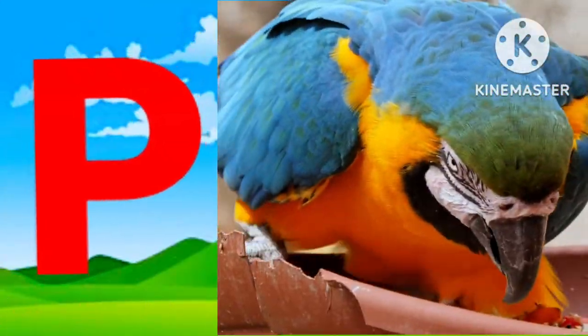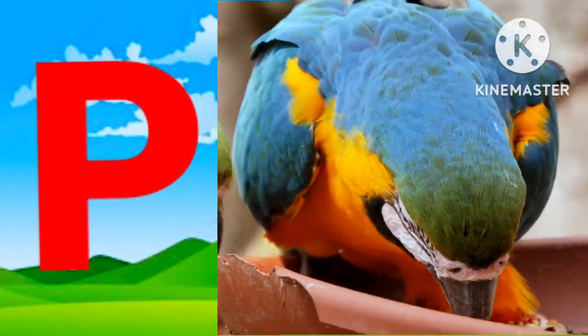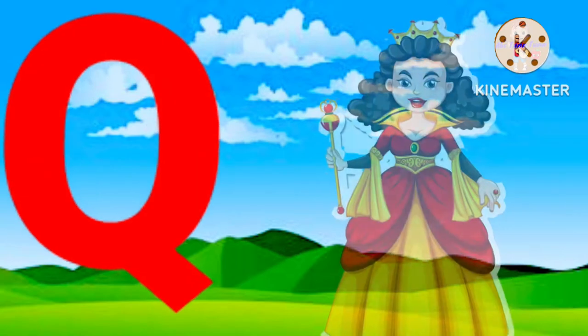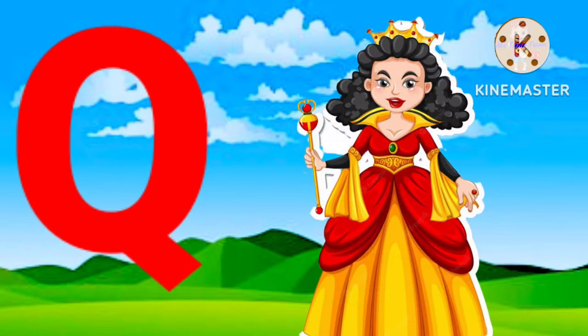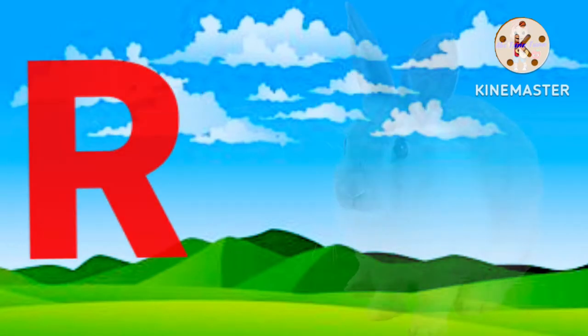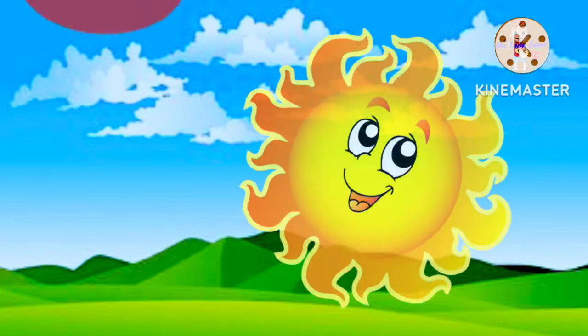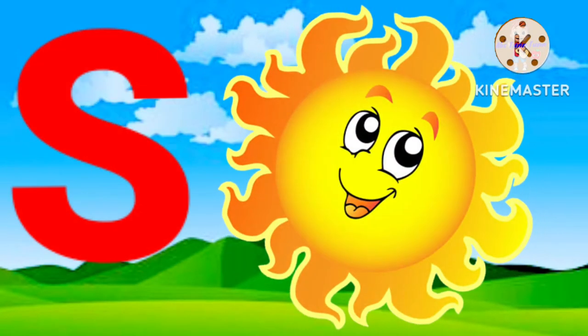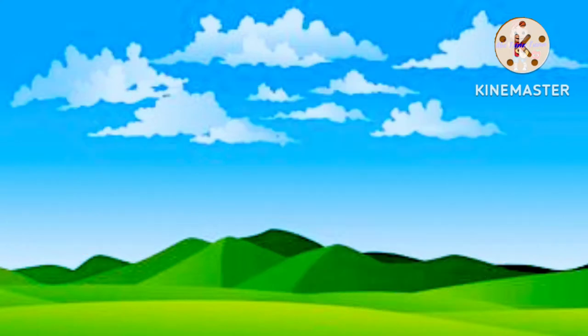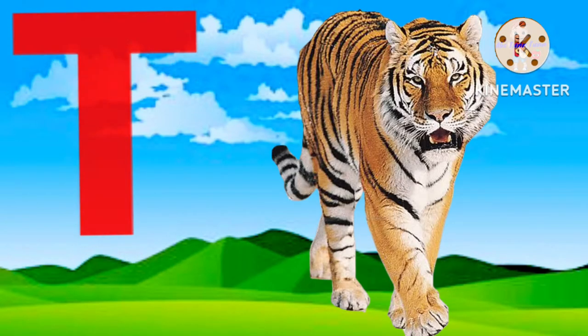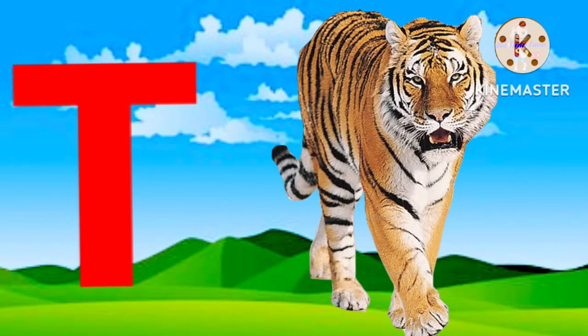B for parrot, Q for queen, R for rat, S for sun, T for tiger.